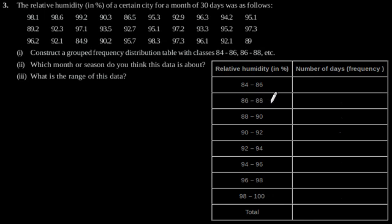86 to 88, 88 to 90, and so on. This is our first part. By observing the data given here, we can construct a grouped frequency distribution table like this. By adding all these, the total we will get is 30.